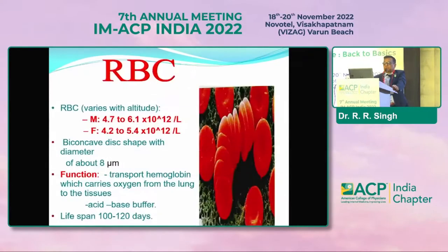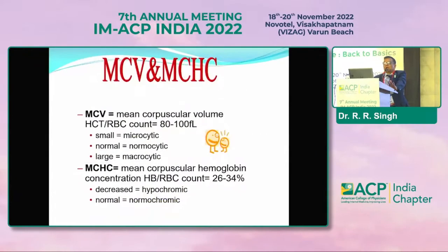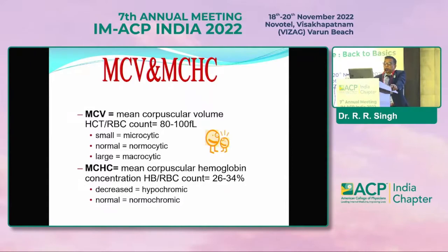Normally in every CBC we find RBC count, hemoglobin, hematocrit, MCV, MCHC, and many other parameters — almost 18 in total. The MCV value is very important: if it is small, that indicates microcytic; if normal, normocytic; and if large, macrocytic anemia. Similarly, MCHC is decreased in hypochromic anemia and normal in normochromic anemia.